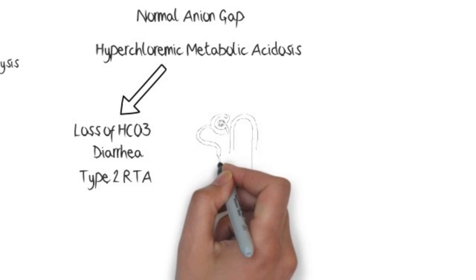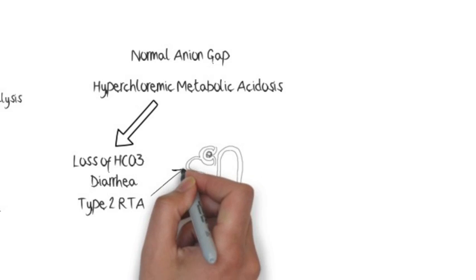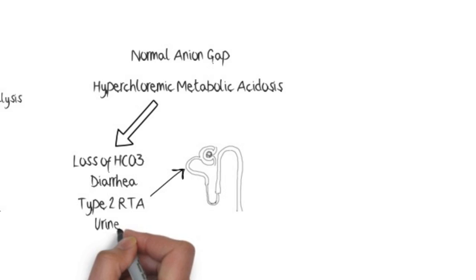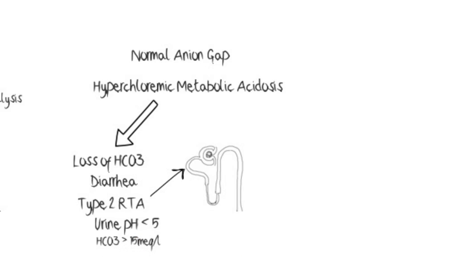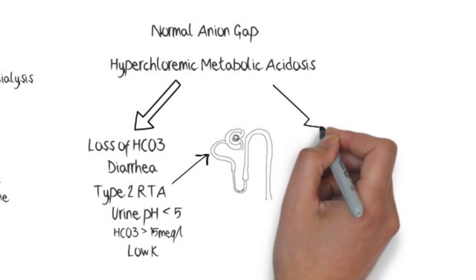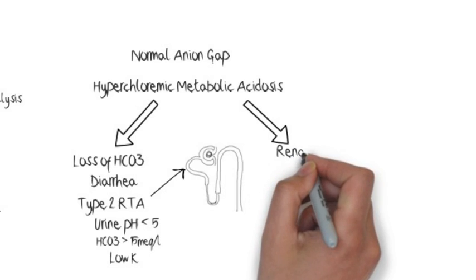In type 2 RTA, the primary problem is impaired reabsorption of bicarb in the proximal tubule. However, urine pH is less than 5, because once bicarb falls below a threshold, urine is appropriately acidified. Bicarb is usually greater than 15, as some bicarb is reabsorbed from the collecting duct. Hypokalemia and osteomalacia are also typical features.